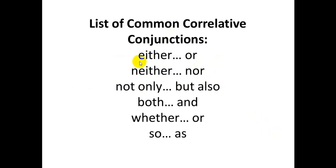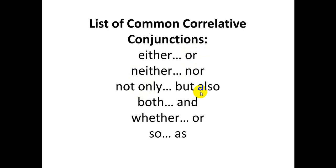Here are the correlative conjunction pairs: either...or, neither...nor, not only...but also, both...and, whether...or, so...as. In a sentence using 'either...or,' the word 'or' must appear. These are all correlative conjunction pairs.